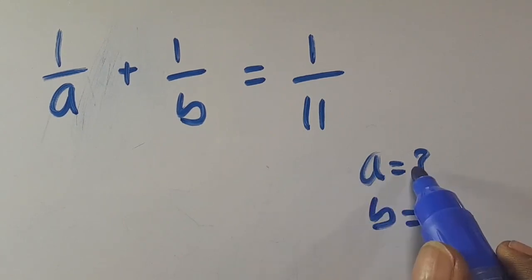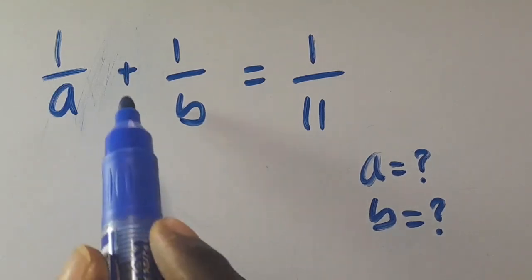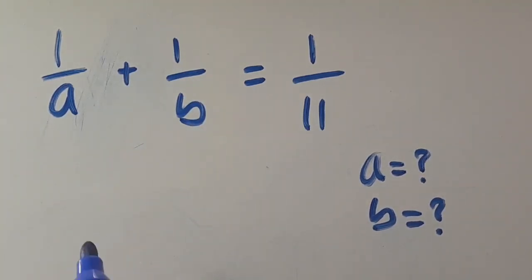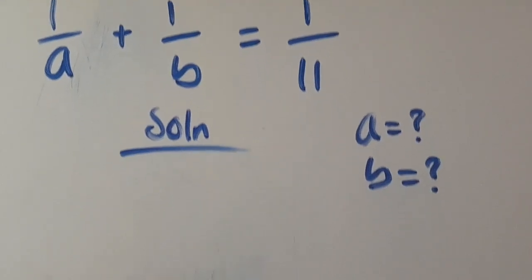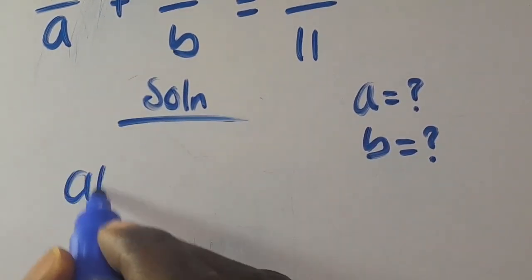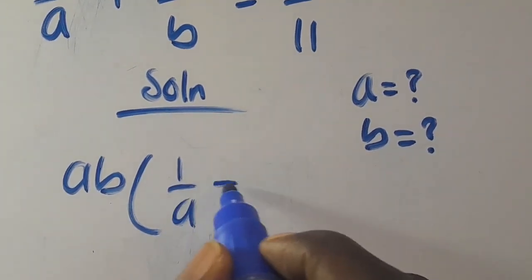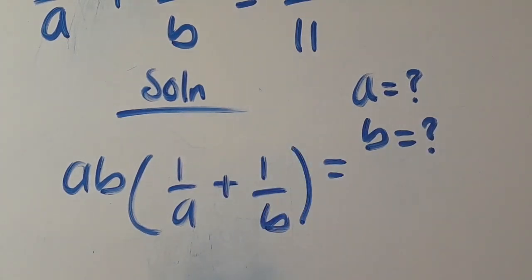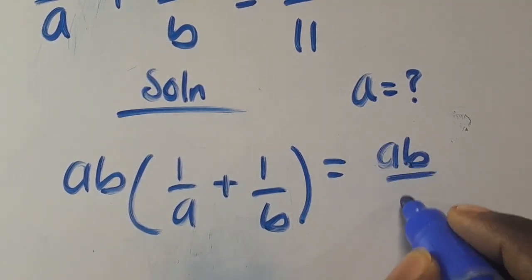We want to find the values of a and b, given that 1/a + 1/b = 1/11. Let's multiply through by ab: ab times (1/a + 1/b) equals ab/11.